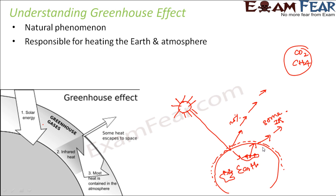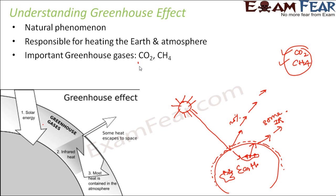This cycle keeps repeating continuously. The gases that absorb a major part of the infrared radiation are called greenhouse gases. The process in which infrared radiation is trapped and results in heating up the earth is called the greenhouse effect. Important greenhouse gases include carbon dioxide and methane.